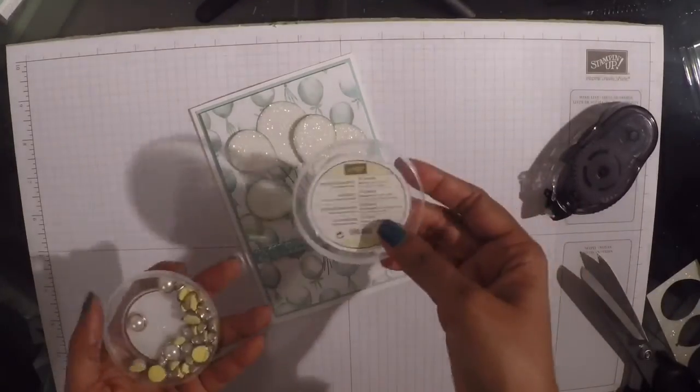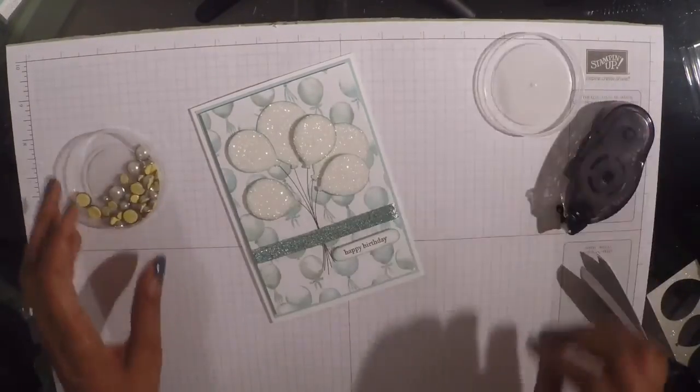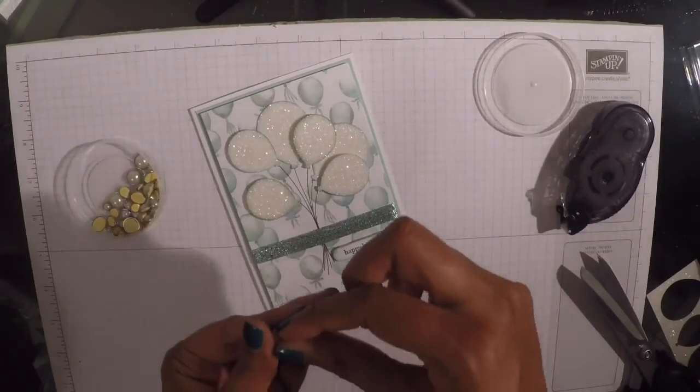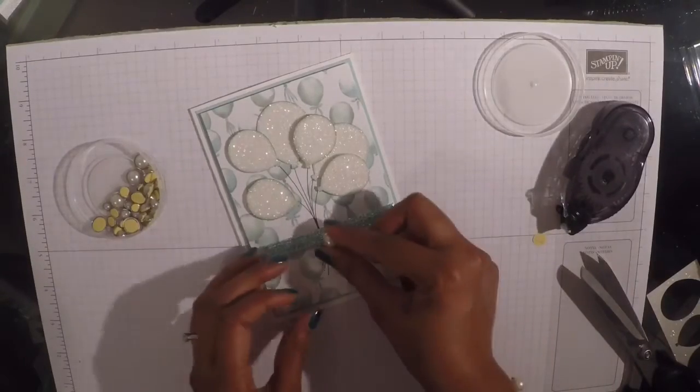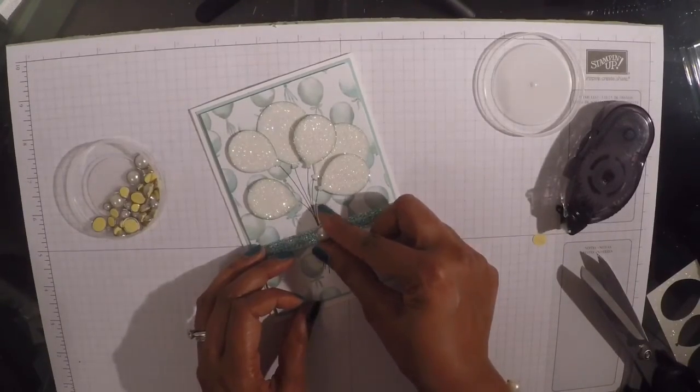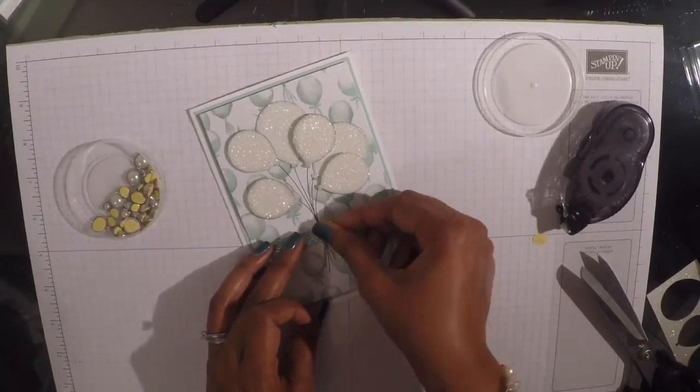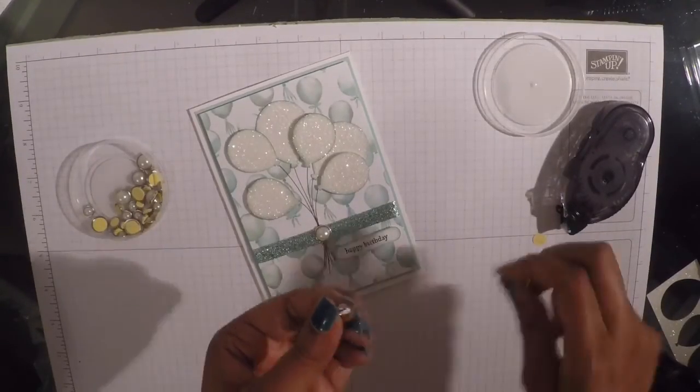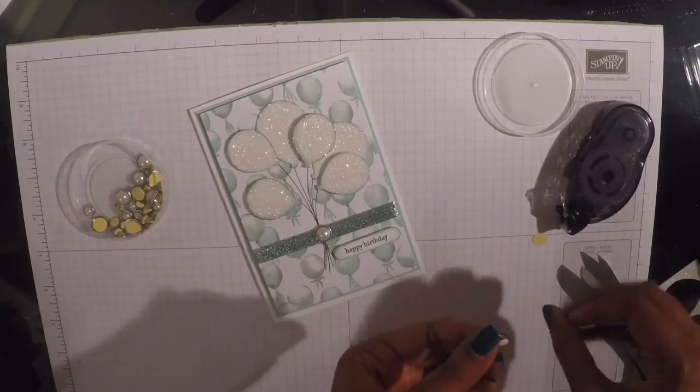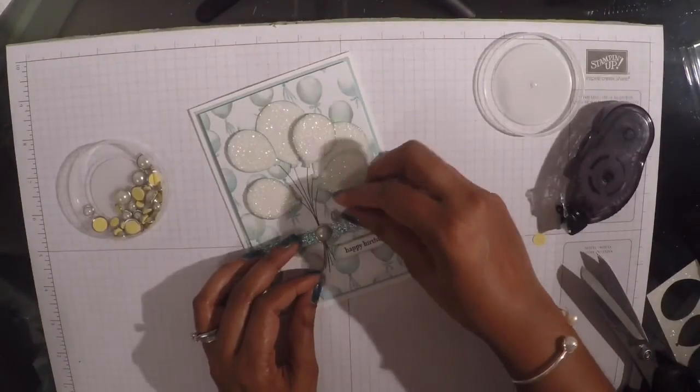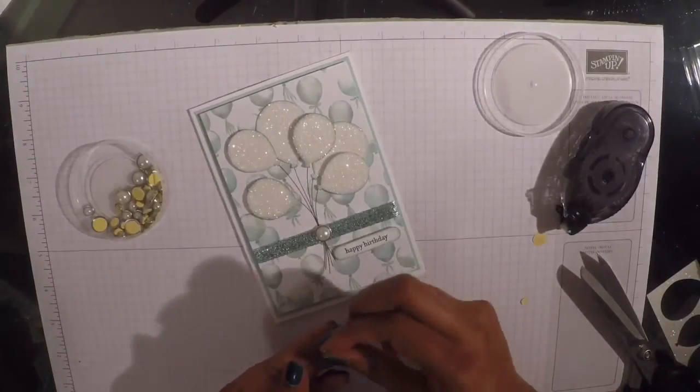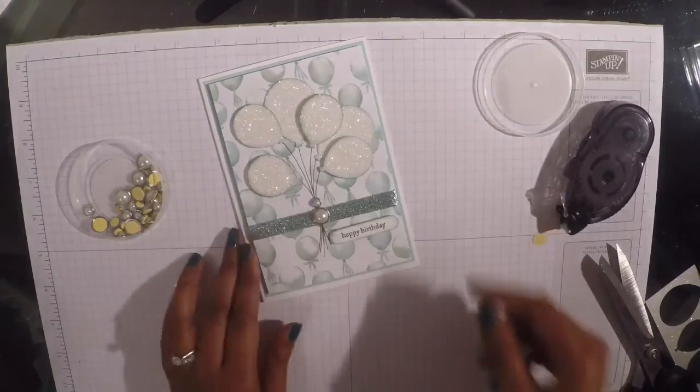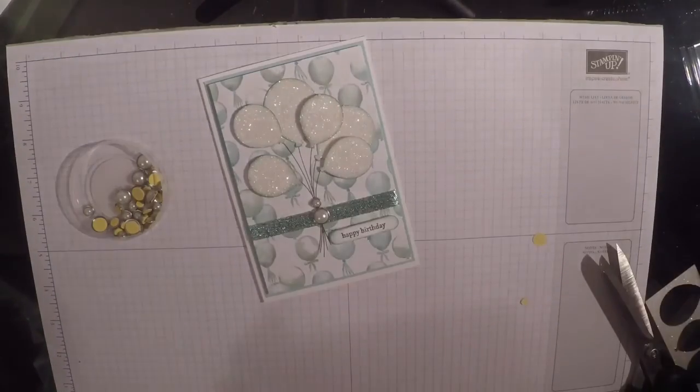Finally, I'm going to take some of my metal ring pearls. I really love these pearls. And I'm just going to put one there. And I'm going to take a small one. And I'm just going to put it on top of the large one. And that is our card complete.